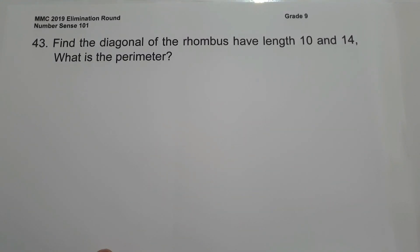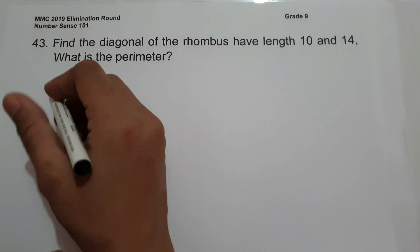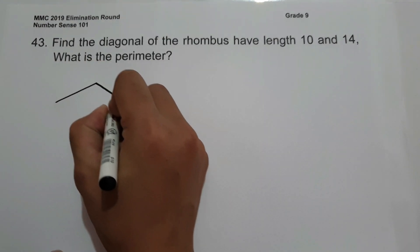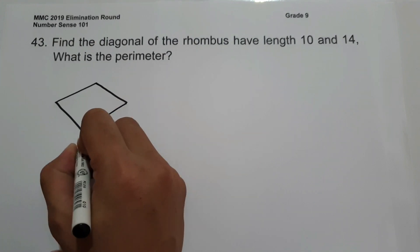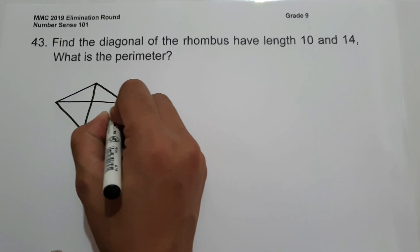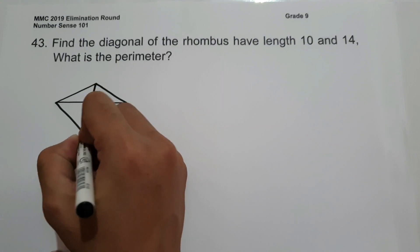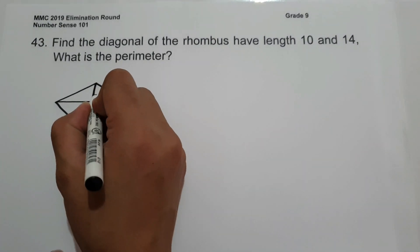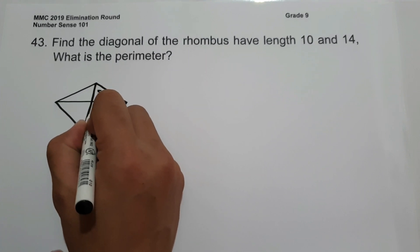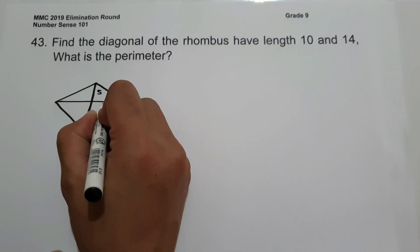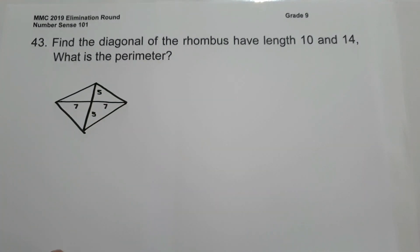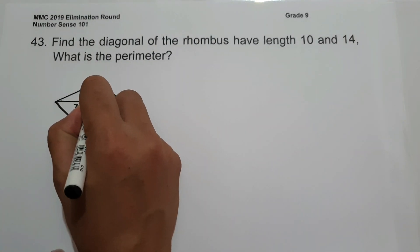On number 43, find the perimeter of a rhombus with diagonals of length 10 and 14. Let us illustrate the given. We have a rhombus with diagonals 10 and 14. The diagonal of length 10 is divided by 2, giving 5 and 5. The diagonal of length 14 gives 7 and 7. The diagonals of a rhombus are perpendicular, so we have a right angle.